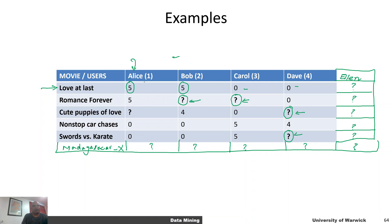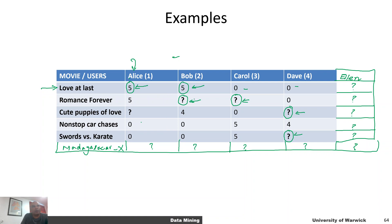If we focus on filling those question marks, we can start to see patterns. Alice and Bob both like 'Love at Last' and both dislike the action movies 'Non-Stop Car Chase' and 'Swords vs. Karate'. This suggests Alice and Bob both prefer romantic movies over action movies. So if Alice gave a movie five stars, Bob will probably give it four to five stars as well, and vice versa.